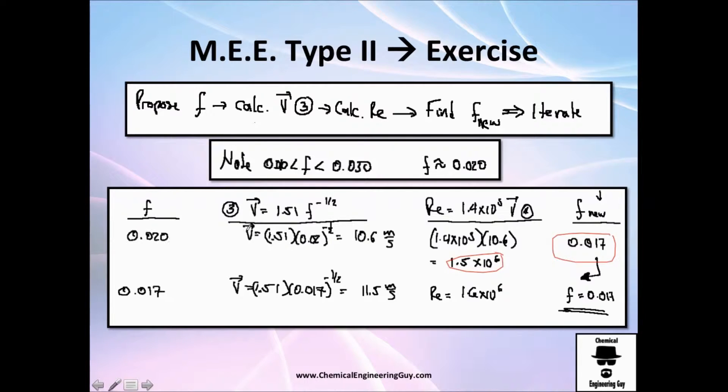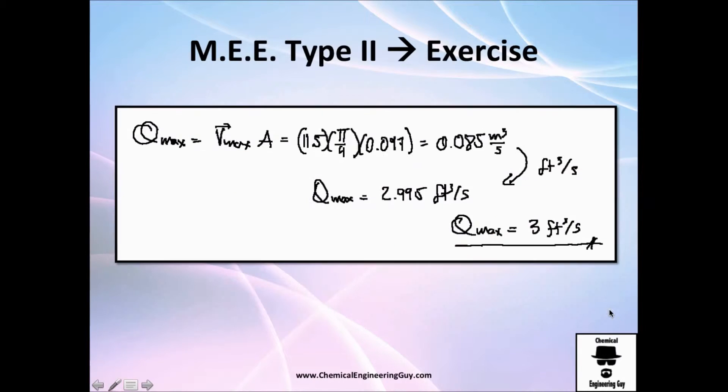I will use this value right here, and do the process again. I calculate velocity from the F value 17. I got 11.5 meters per second. Calculate Reynolds number is almost the same. And now, I check out, and my friction factor is the same, so I can say this is my final answer.